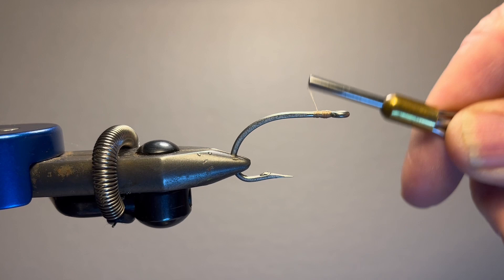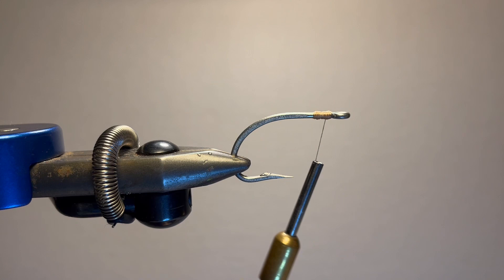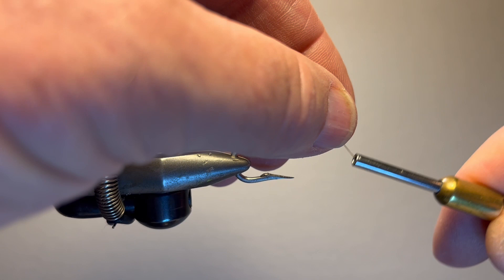I actually tie a lot of mine on jig hooks, but this is the original style. It was tied on a short shank. Now I'm going to take bead chain. It's not going to add a lot of weight to it, but this gives it the name, the Whistler. As you cast these, you will hear it whistle.